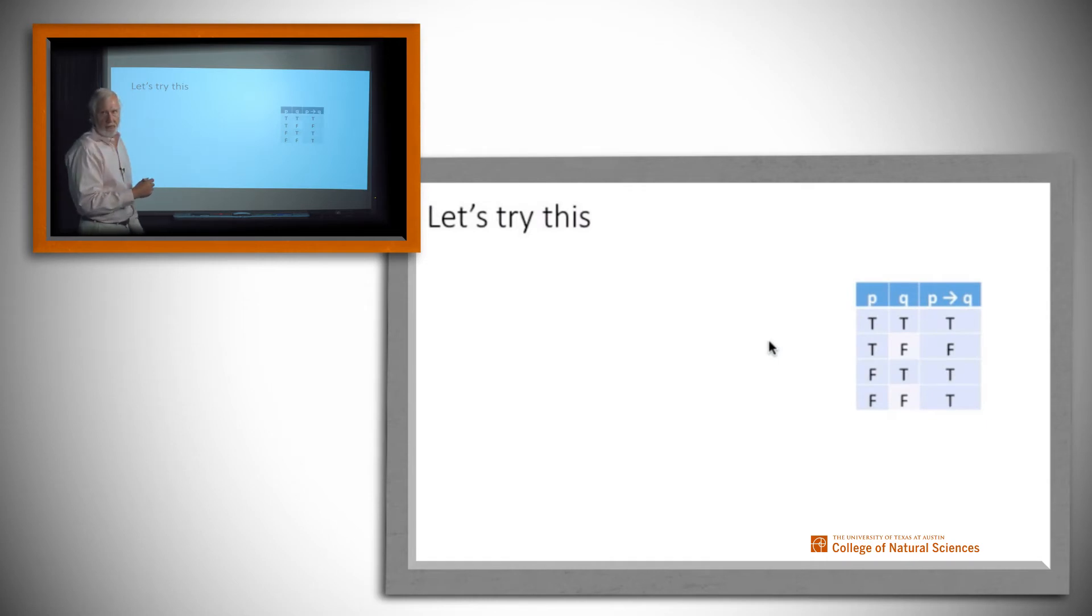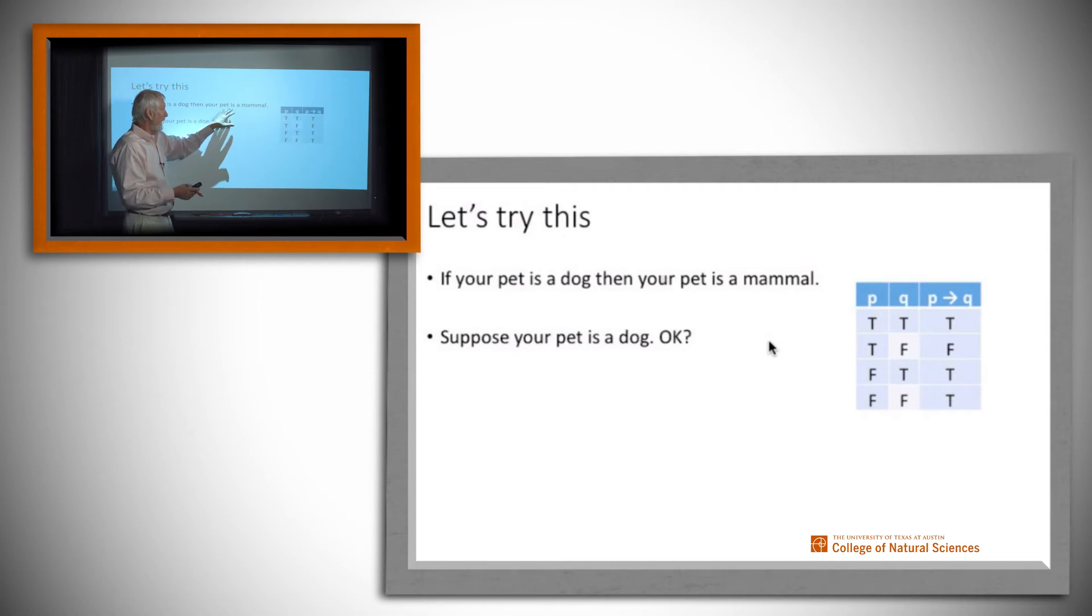Let's see some examples right here if we've learned this. First one, we're going to assume that if your pet is a dog then your pet is a mammal. Now suppose your pet is a dog. Do we still think that this is a true statement right here? Well, if your pet is a dog, then the antecedent right here is true. We also believe that dogs are mammals. So we also have that the consequent is true. We're in this situation right here, and we're not upset that the implication is true.